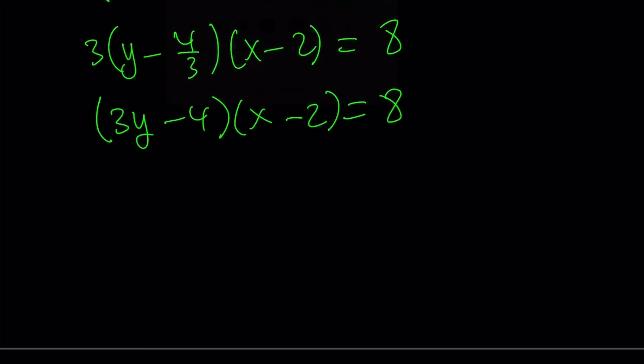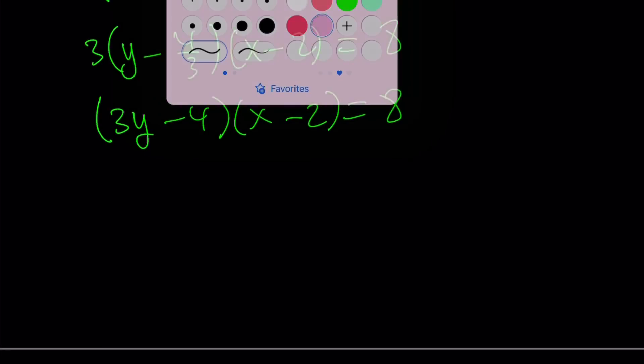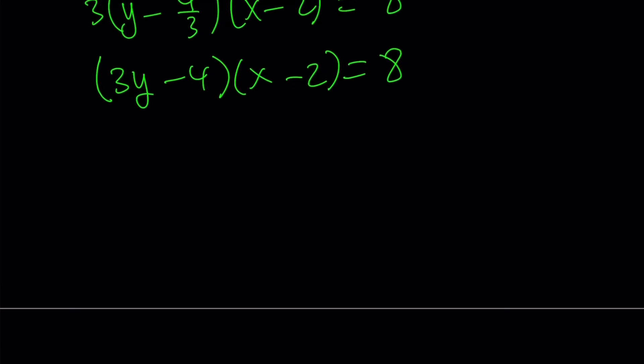Now in this equation, our goal is to find factors of 8 because x and y are integers. So if x is an integer, x minus 2 is an integer. Therefore, that needs to be a divisor of 8 or a factor of 8.